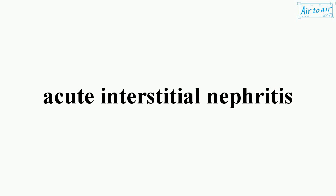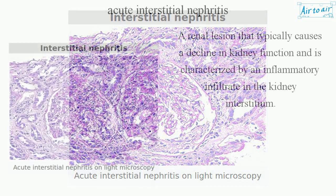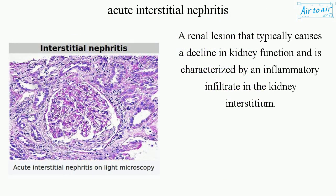Acute interstitial nephritis is a renal lesion that typically causes a decline in kidney function and is characterized by an inflammatory infiltrate in the kidney interstitium.